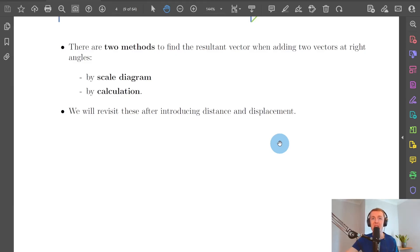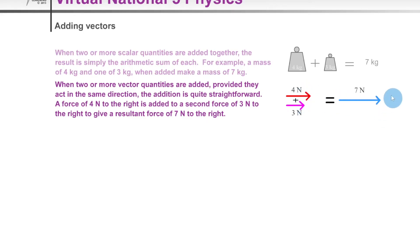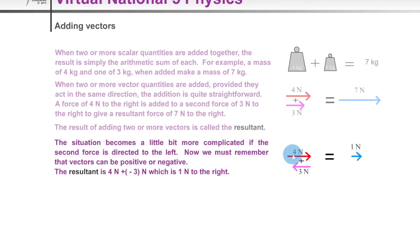Here are some simulations to help understand adding vectors in one dimension and at right angles. Force is used as the example since force is a vector requiring both magnitude and direction. In one dimension, adding a 4 newton vector to a 3 newton vector nose to tail — from start to the end of the second vector — gives a resultant of 7 newtons. On the other hand, a 4 newton vector to the right added to a 3 newton vector to the left gives a resultant of 1 newton to the right.